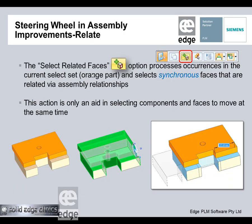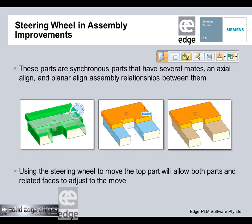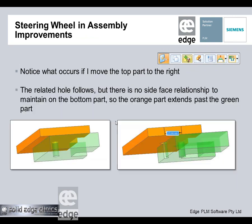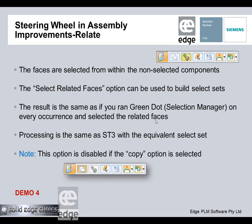The next feature is 'Move Select Related Faces' — it looks a little like magic. What we're doing is selecting synchronous faces on a component. Anything that has an assembly relationship in the assembly will come with it. We select a component, it has assembly relationships, we modify it, and the underlying parts become modified automatically.